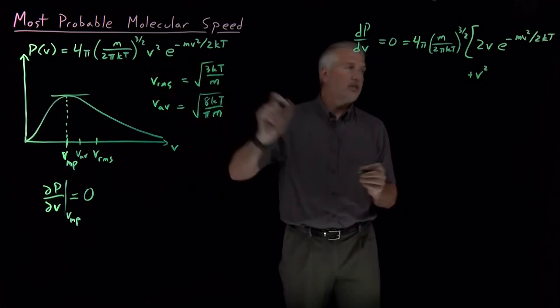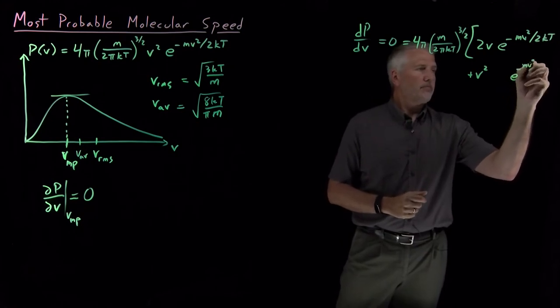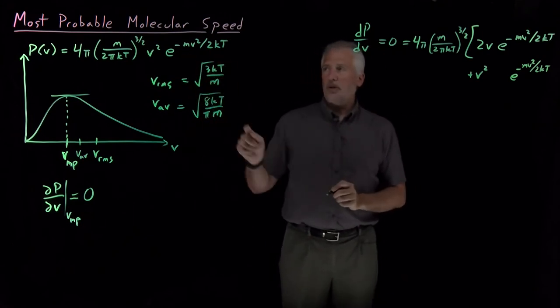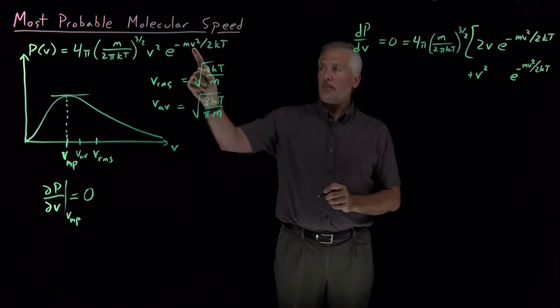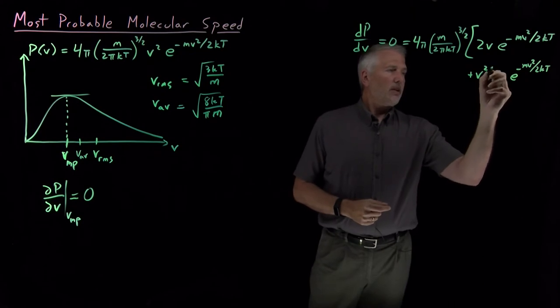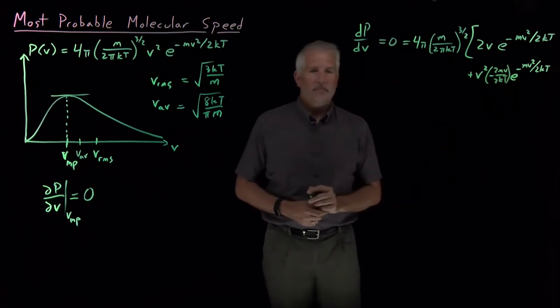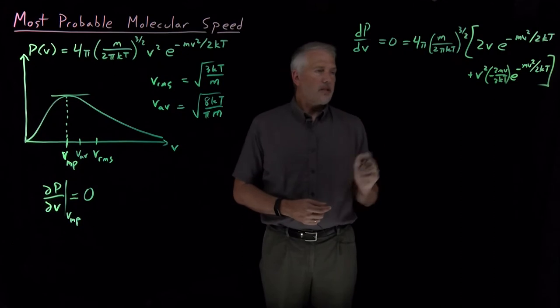The derivative of this exponential is the exponential times the derivative of the exponent. So the derivative of the V squared up here gives me 2V, so if I include the constants minus m over 2kT, I've got altogether minus 2mV over 2kT. And that's all multiplied by these constants out front.